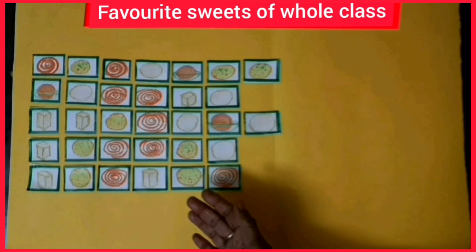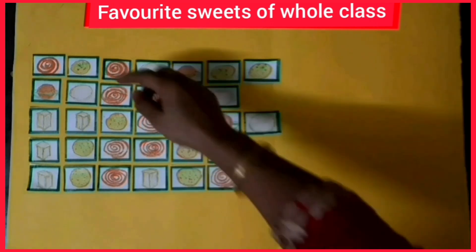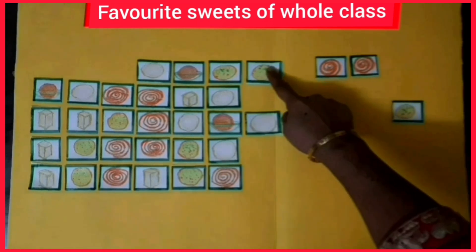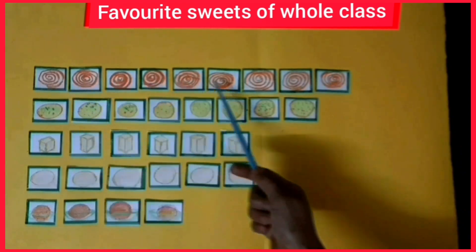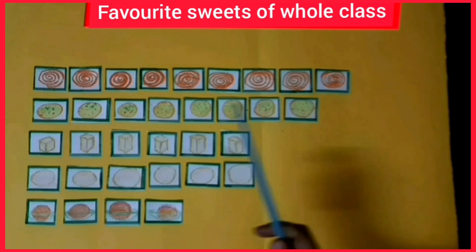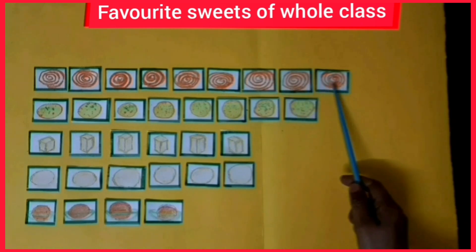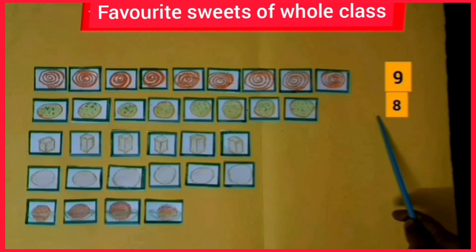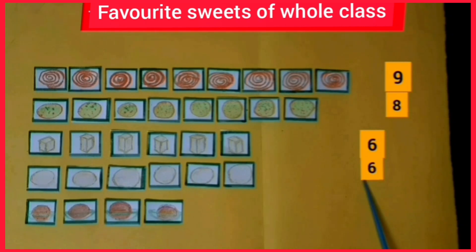Now, according to the liking of sweets, we will distribute them into different groups. We will see how many children like jalebi and how many like barfi. We will distribute these sweets into five different groups and count them. Nine children like jalebi. Next, laddu is liked by eight children. Barfi by six, rasgulla by six, and gulab jamun by four children.